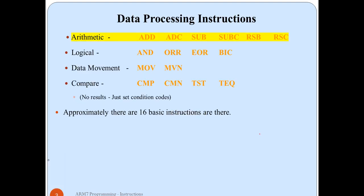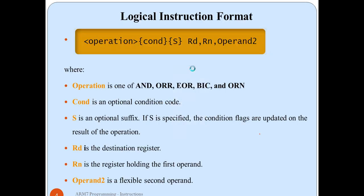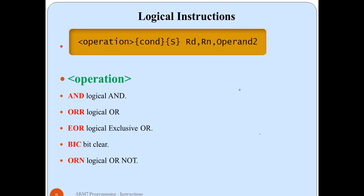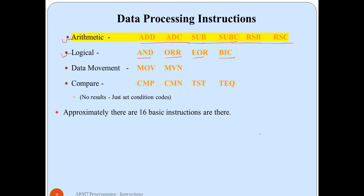In logical instructions we have basically five instructions: first is AND, second is OR, third is XOR, fourth is BIC (bit clear), and there is one more instruction which is ORN — that is OR with NOT logic. These five instructions we are going to cover in this logical instructions section.